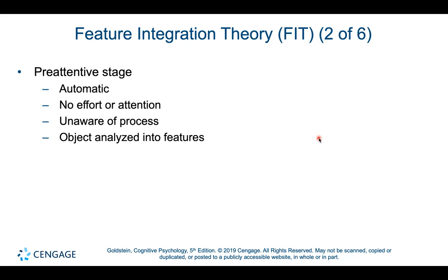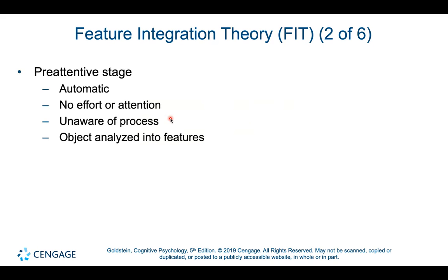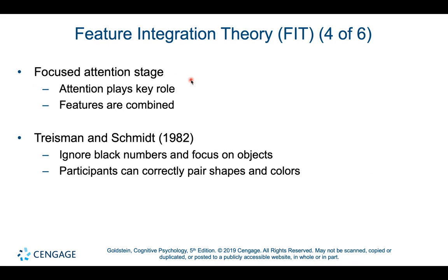An object enters what's known as the pre-attentive stage, where you analyze the features: color, shape, size, motion. Once you focus attention, the features are combined back together to form a perception. This is the intrinsic tie between perception and attention. The pre-attentive stage is automatic, does not require attention or effort, and you are completely unaware of it — think of it as all those little neurons in your visual system going: I see green, I see a square, I see motion to the left. In the focused attention stage, attention combines those features back together and allows for higher-order processing of objects.